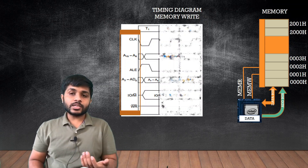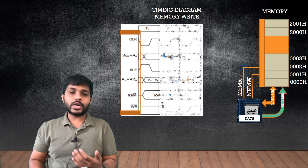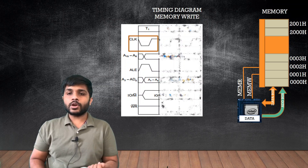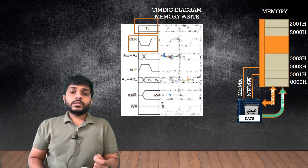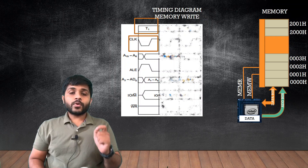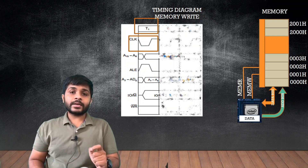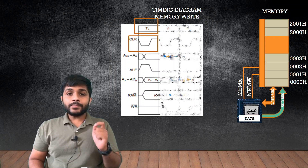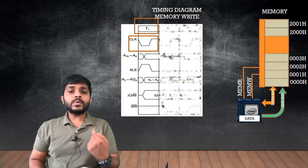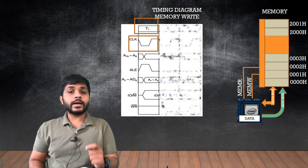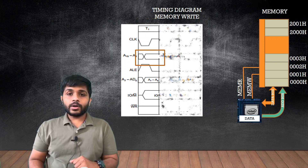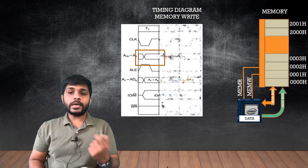Then there are the control signals: IO/M̄ and RD̄. A T-state is defined as the period from where the clock starts to where it ends — when the clock completes one cycle, that is considered one T-state. There is also the higher-order bus A8 to A15.